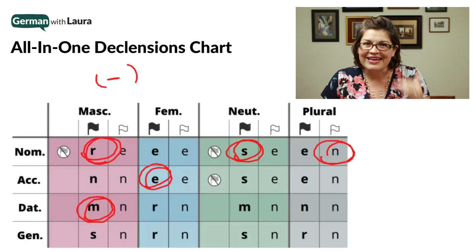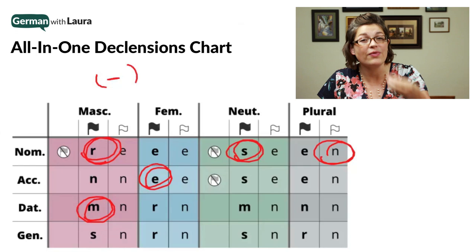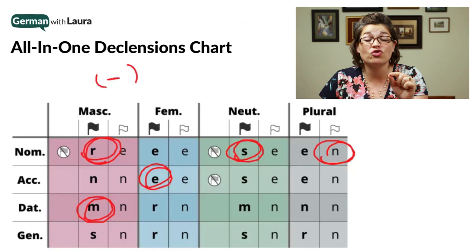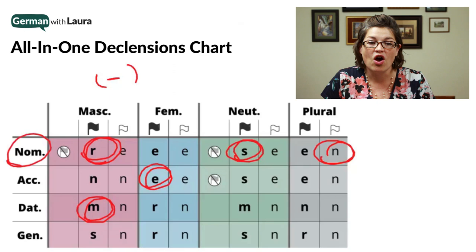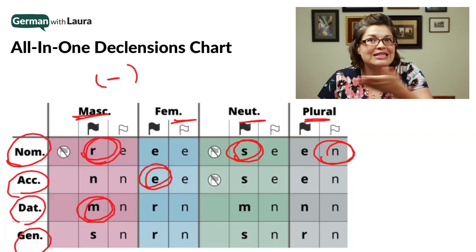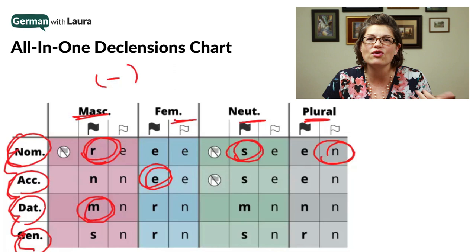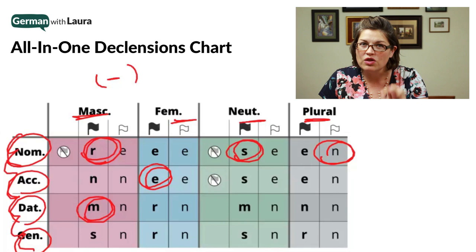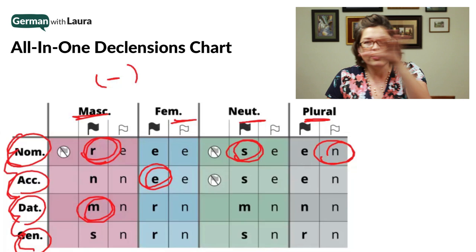These declensions have to go onto the ends of words coming in front of nouns so that we know which noun is the subject, which is the direct object, and which is the indirect object — and therefore what case it's in. All the cases are listed on the sides, and all of the genders are listed across the top. So we're taking into account the gender of the noun — that's why it's so important to know the 'der, die, das' coming in front of German nouns. Then we have the case, and we can refer to the all-in-one declensions chart for the declension combinations we need at one of the 16 intersections.